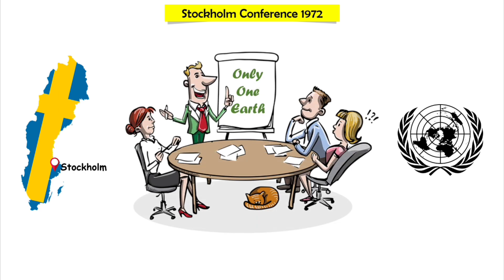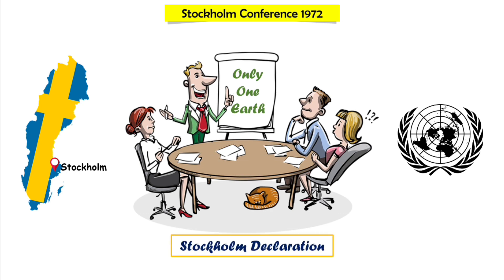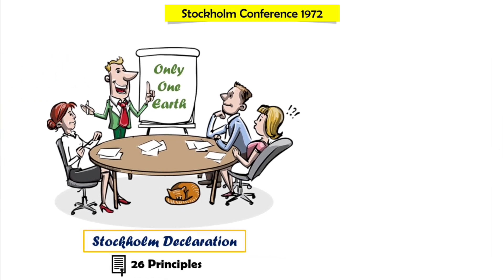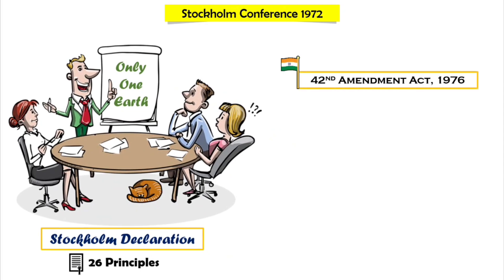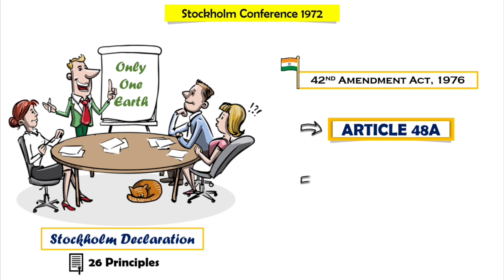The declaration that came after the Stockholm meeting is called the Stockholm Declaration, in which 26 principles related to environment and development were mentioned. India supported it a lot, and for this reason, by the 42nd Amendment Act of 1976, Article 48A and Article 51A were inserted in the Indian Constitution for the protection of the environment.